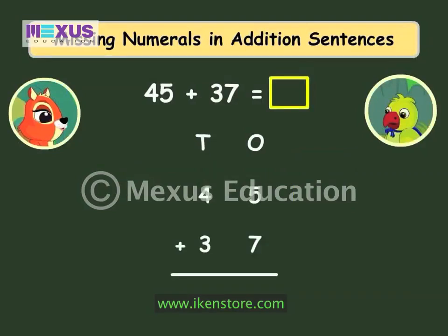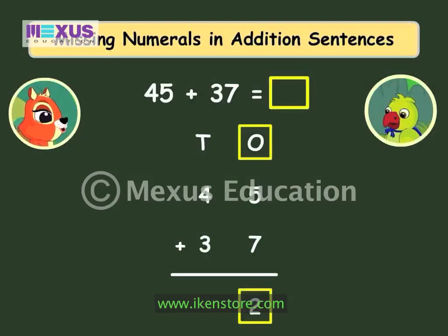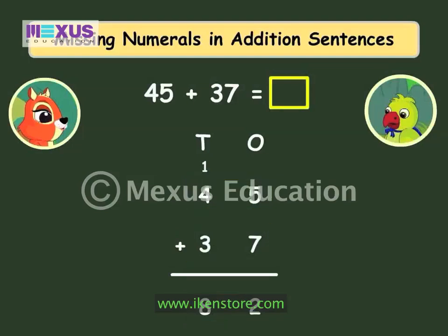This is easy. I just have to find the sum of 45 and 37. I will write the numbers one below the other. Addition of the ones gives 12 — I will write 2 in the ones place and carry over 1 to the tens place. Addition of the tens gives 8. So 45 plus 37 is 82.